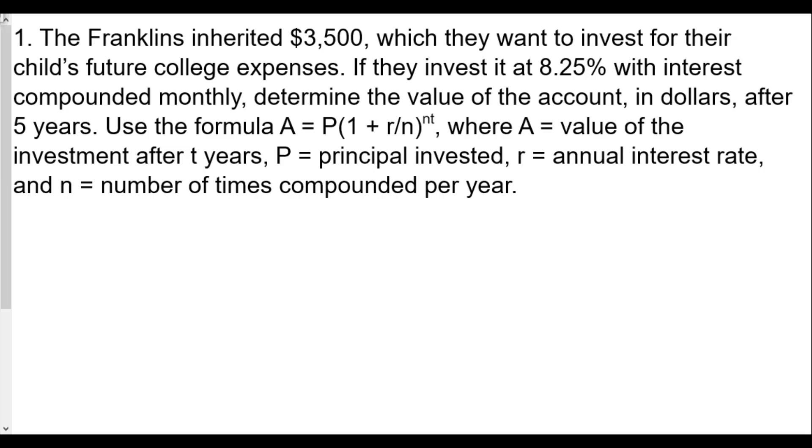Use the formula A = P(1 + r/n)^(nt) where A is value of investment after t years, P is the principal invested, r is the annual interest rate, and n is the number of times compounded per year.